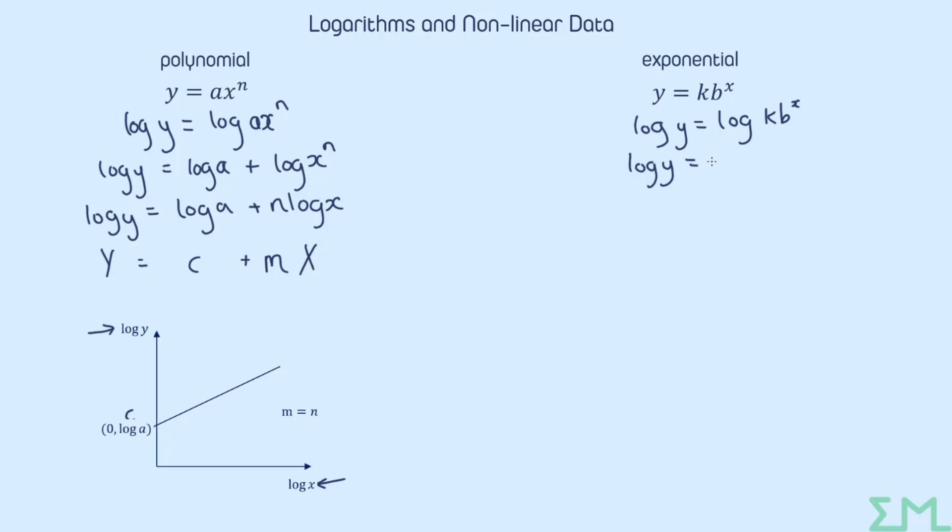We're going to do the same process. So log y equals log kb to the x. Again, we're going to split apart the multiplication first. Log k plus log b to the x. And then we can finally bring down the power. So it is exactly the same process as the polynomial.